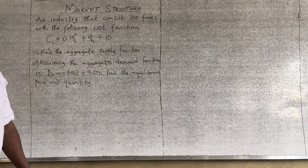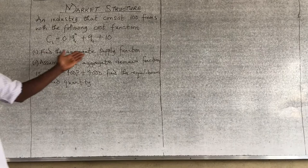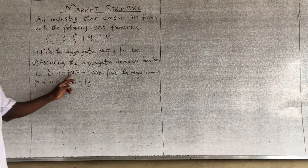Look at this question. We have a market structure, an industry that consists of 100 firms with the following cost function: C_i equals 0.1Q_i squared plus Q_i plus 10. Find the aggregate supply function. Assuming the aggregate demand function D is given, find the equilibrium price and quantity.